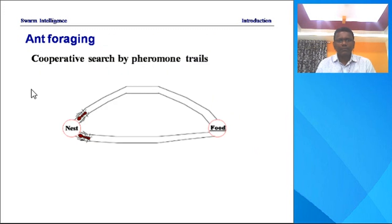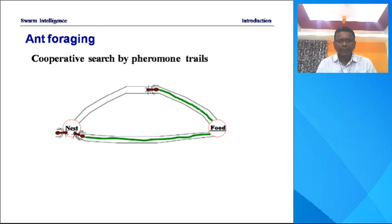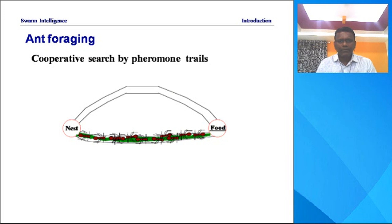Here one example is shown — ant foraging. Cooperative search by pheromone trails. The nest of the ant is shown and the food is here. The ant travels in search of food. You can observe how they are travelling and how they are getting their food. The number of ants increases and without overlapping, without disturbing other ants, effectively, efficiently, and accurately the ants get their food and come back to their nest.